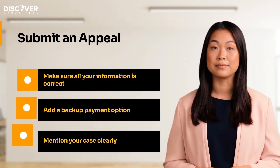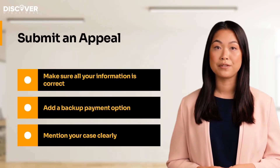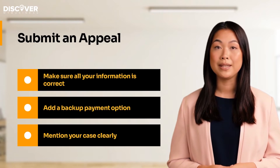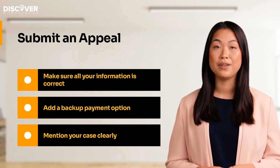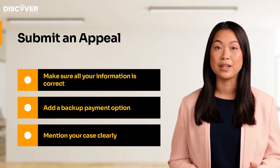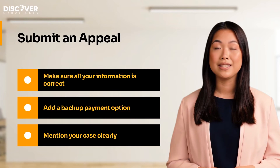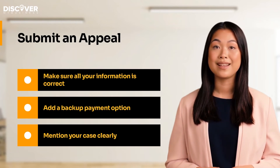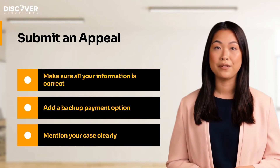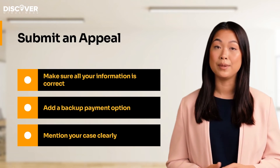Submit an appeal. Take note of the following points when going forward with an appeal: Make sure all your information is correct and in order. Add a backup payment option before filing the appeal form. Mention your case clearly and why you think this was an error. Lastly, clarify what card you are using and why you think this is the best way to pay.